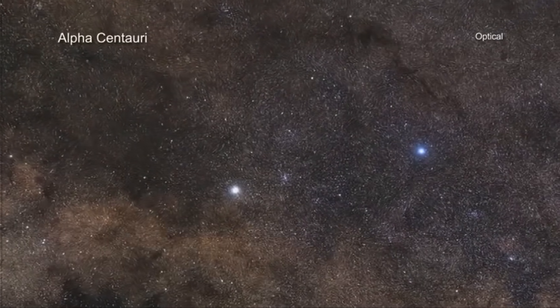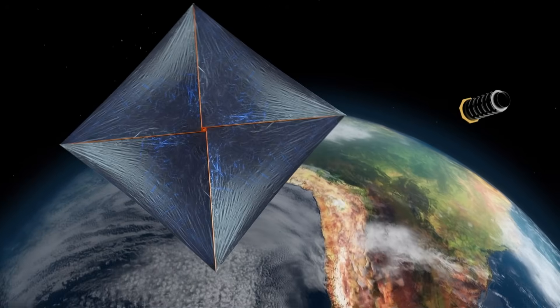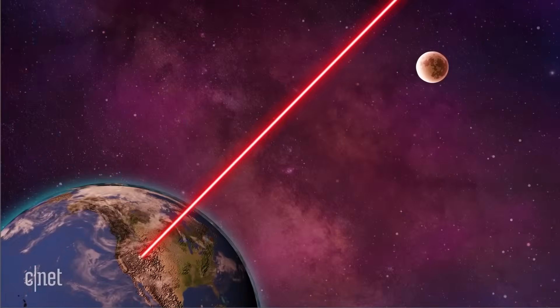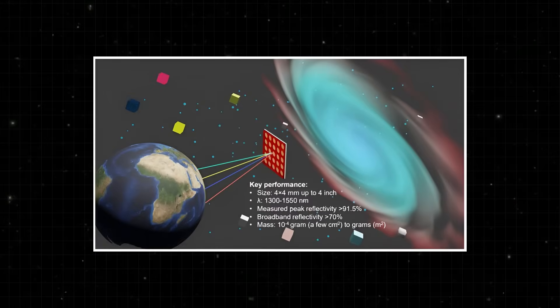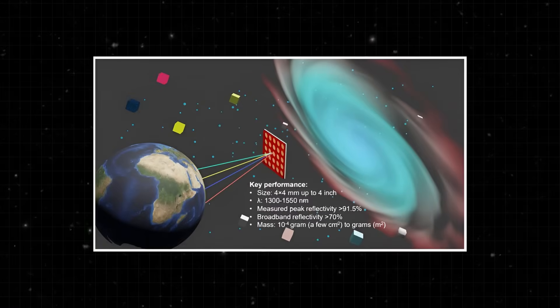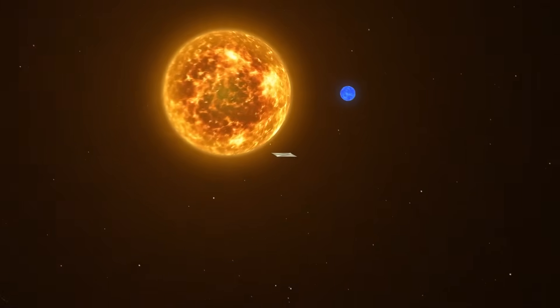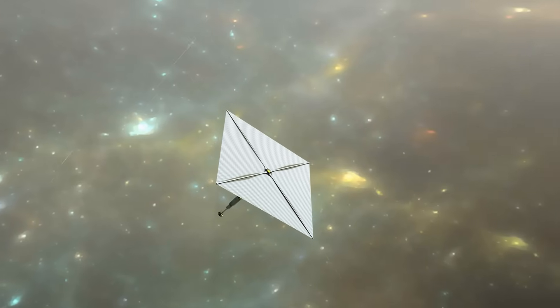That is where Breakthrough Starshot comes in. The project proposes launching gram-scale star chips attached to ultra-thin light sails and pushing them to around 20% of the speed of light using powerful ground-based lasers. On paper, that's incredible. At that speed, a probe could cross the four light years to Alpha Centauri in about 20 years.